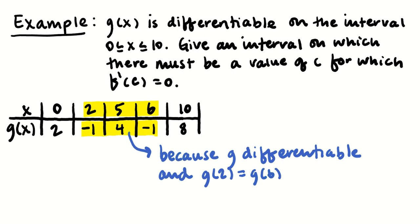Because g is differentiable and g of 2 is the same as g of 6, which is negative 1. Really, it doesn't even matter that it equals negative 1. Just because g is differentiable and g of 2 equals g of 6, there is a c with g prime of c equals 0 on the interval 2 to 6.